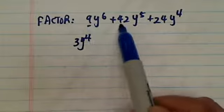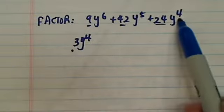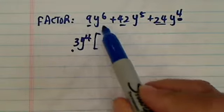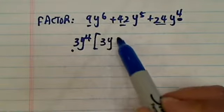There's a factor of 3 in there, so we'll put a 3 out. The largest factor we can put out for y is y to the fourth. Then what you have left over here is 3y squared.